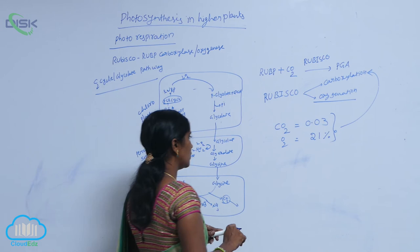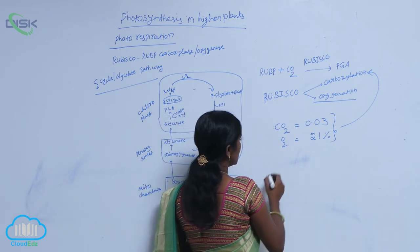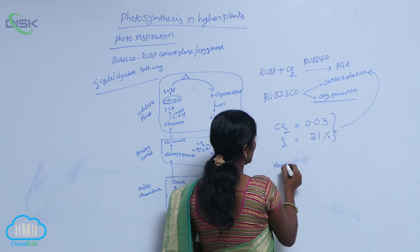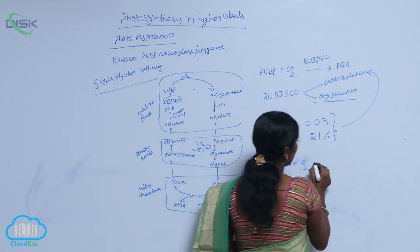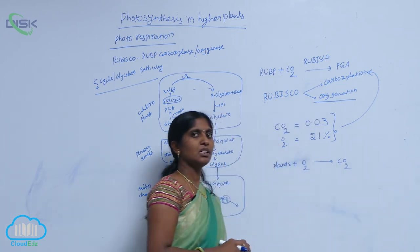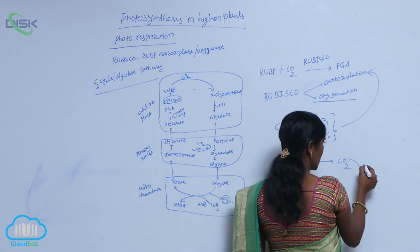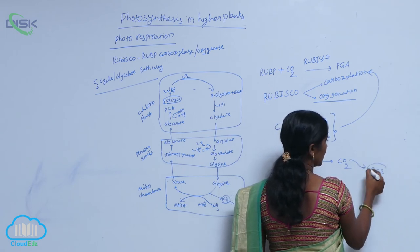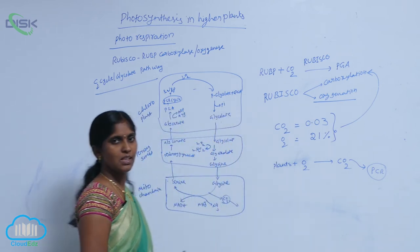What happens in photorespiration? In photorespiration, the plants absorb O2 and they release CO2. The released CO2 is then utilized for the PCR cycle, that is the C3 cycle.